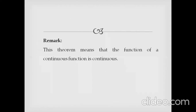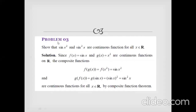We show that sin(x²) and sin²(x) are continuous functions for all x belonging to ℝ. We have two functions: f(x) = sin(x) and g(x) = x². Both sin(x) and x² are continuous on the real line. The graph of sin(x) is continuous.